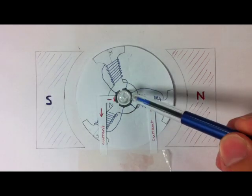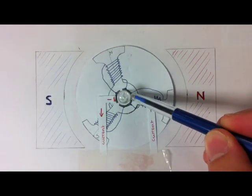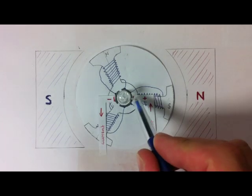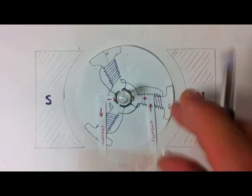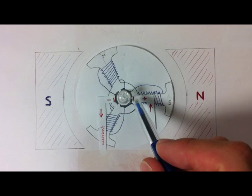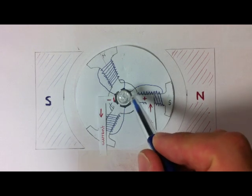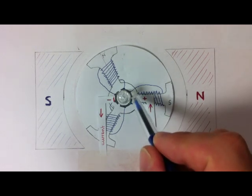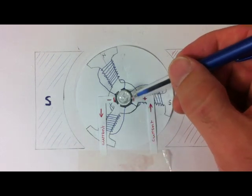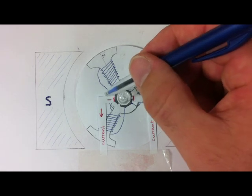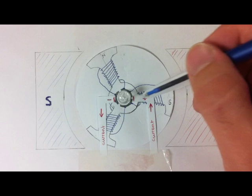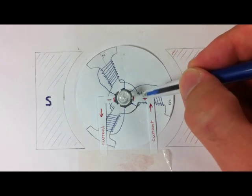This is quite important here. This brush here actually shorts out this coil. So in this particular stage of rotation, where that coil there is perfectly horizontal, the split in the commutator, this brush actually shorts out this whole coil. So there's no current running through this coil at this stage, because as you can see.